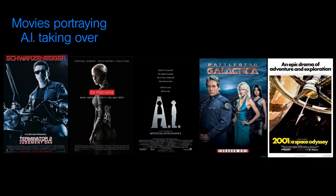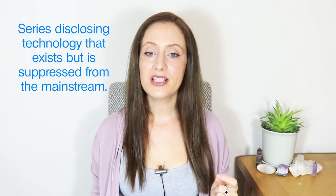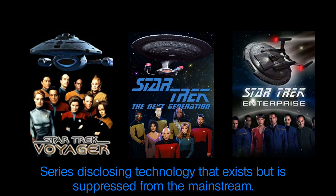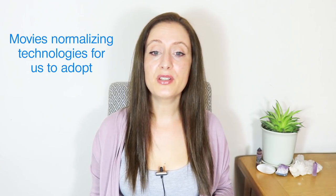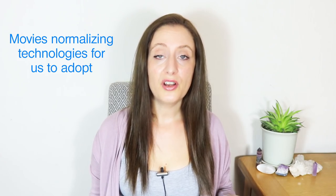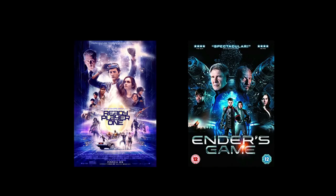Another example is AI taking over: the Terminator movies, Ex Machina, the Steven Spielberg movie AI, Battlestar Galactica, and 2001: A Space Odyssey. There's also Star Trek — nanotechnology, impulse and warp drive, and all the technology they talk about are actually based on real technologies. Other technology films we can accept include virtual reality, where we accept VR as recreation because life is so bad on the outside that we gain happiness in virtual reality — for example, Ready Player One and Ender's Game. So kids are more likely to accept this when it comes along.